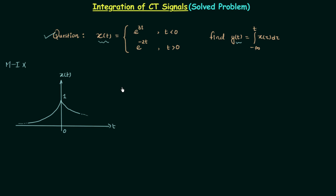Regarding method 2, we obtain the mathematical representation of the signal related to ramp and step. However, in this case the signal is not related to ramp and step, and the mathematical representation is already given. So we will also not use method 2. The only remaining method is method 3.